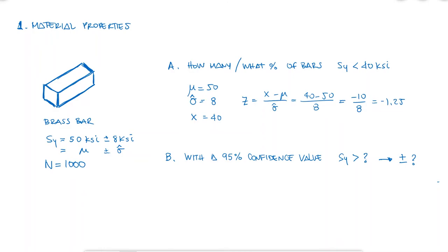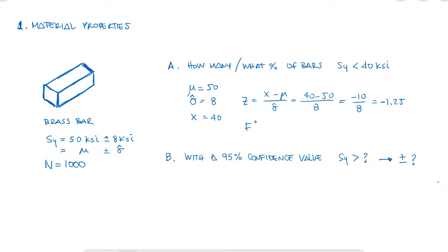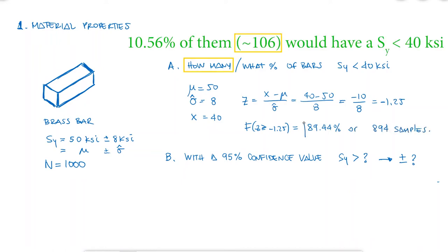If I look up the value of 1.25 for Z and the probability for that value in a normal distribution curve, I find that 89.44% of my samples will have a yield strength greater than 40 KSI.